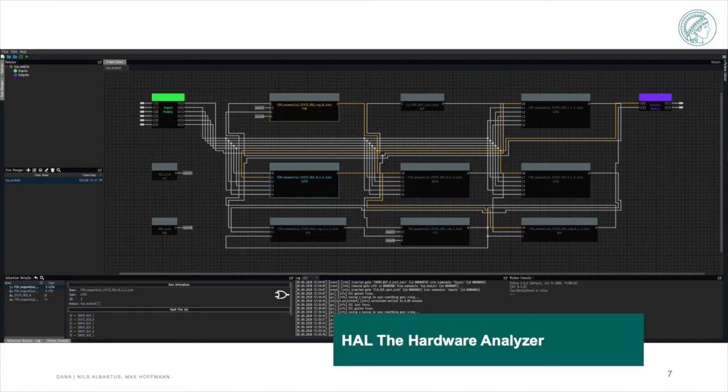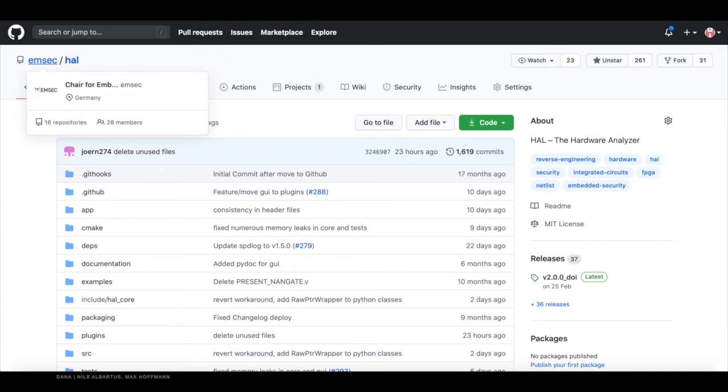HAL provides a graphical user interface to assist the reverse engineering process and already comes with quite a few plugins to further investigate the netlist. The core itself is written in highly optimized C++ and HAL is available open-source on GitHub.